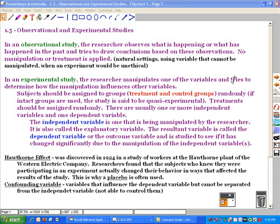In an observational study, the researcher observes what's happening or what has happened in the past and tries to draw conclusions based on these observations. There's no manipulation of the variables. There's no treatment that's applied. The researcher just merely makes observations and records what is seen.